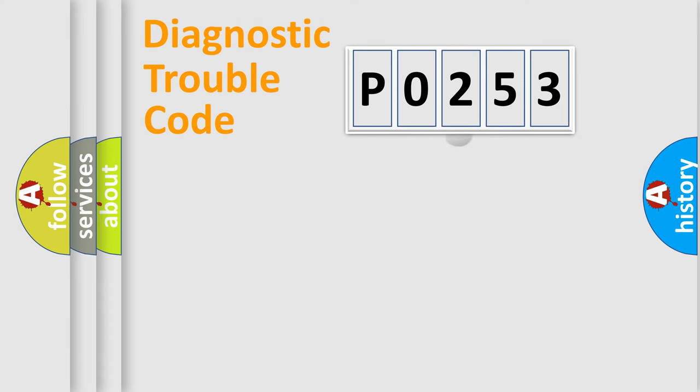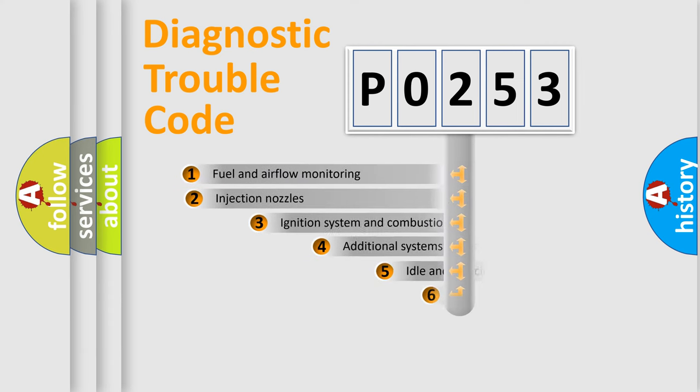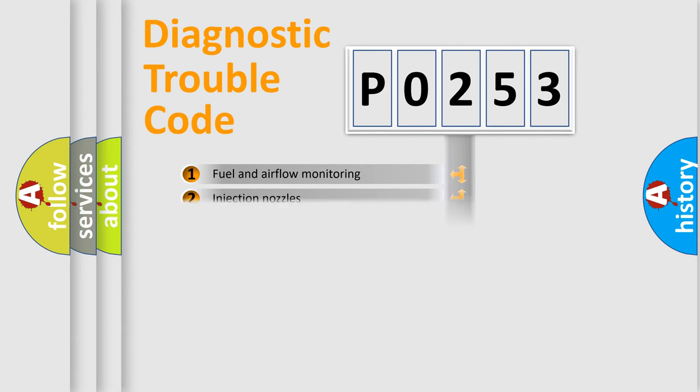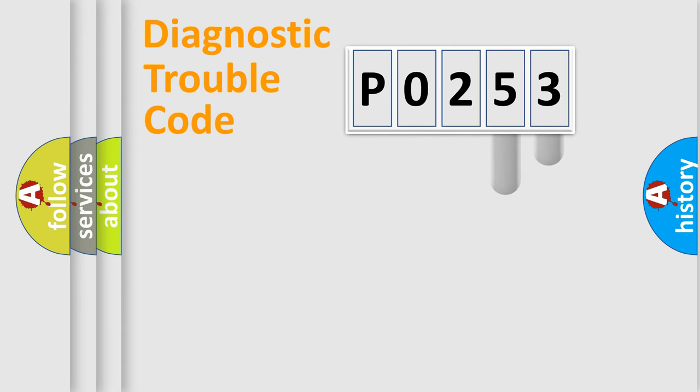The third character specifies a subset of errors. The distribution shown is valid only for the standardized DTC code.